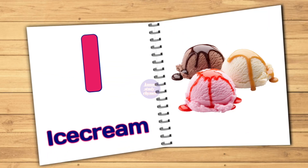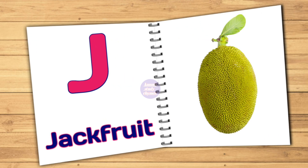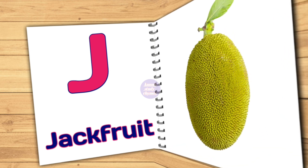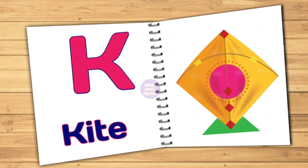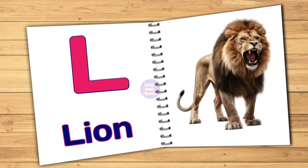I for Ice Cream. J. J for Jackfruit. K. K for Kite. L for Lion.